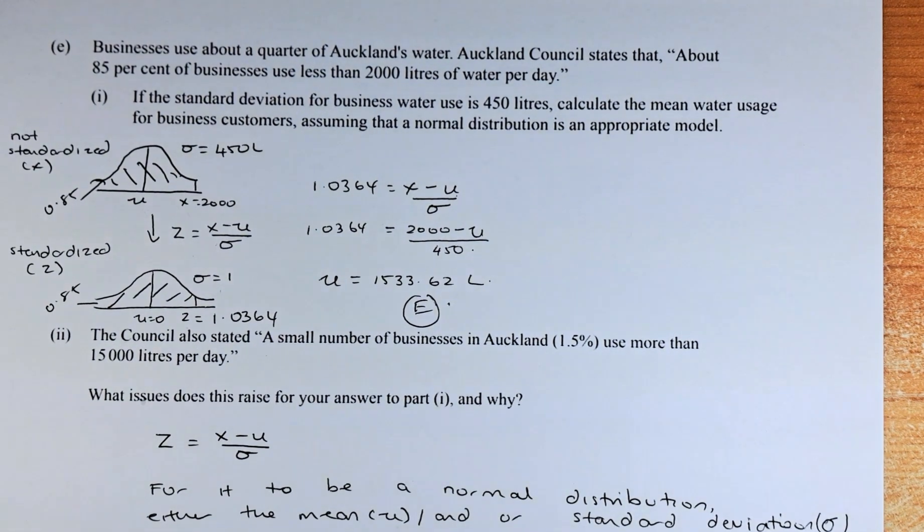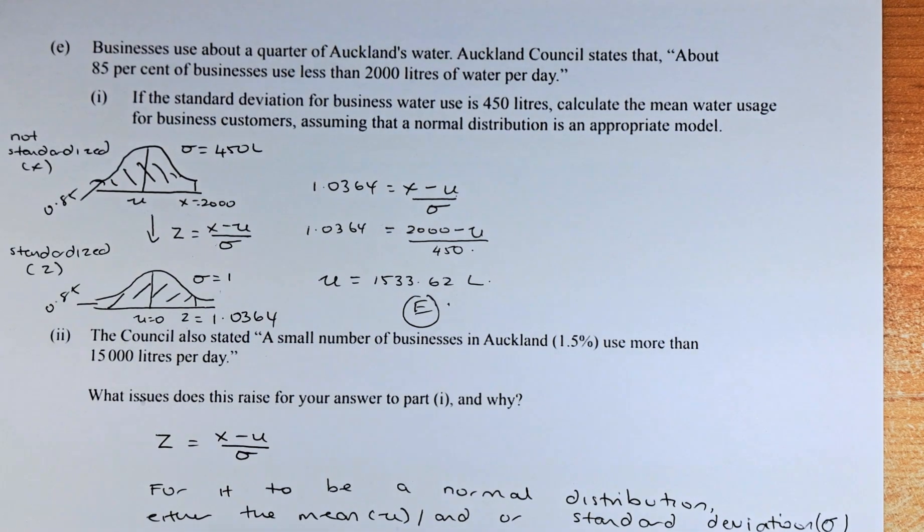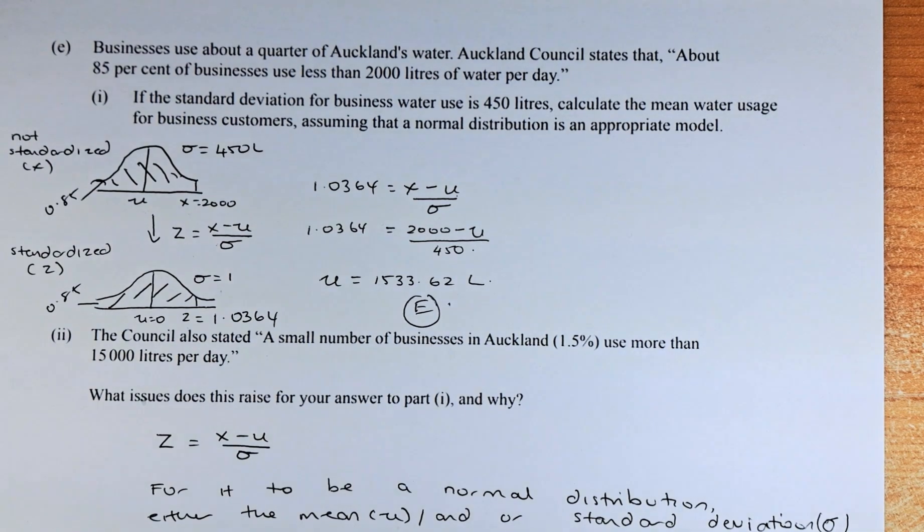The council also stated a small number of businesses in Auckland, 1.5% use more than 15,000 litres per day. What issues does this raise?